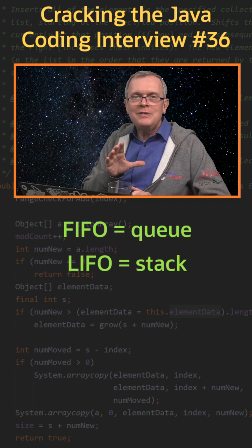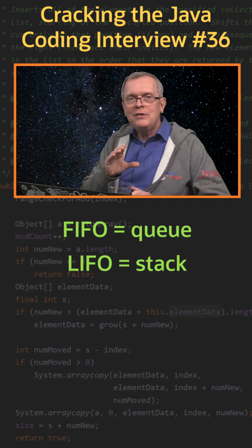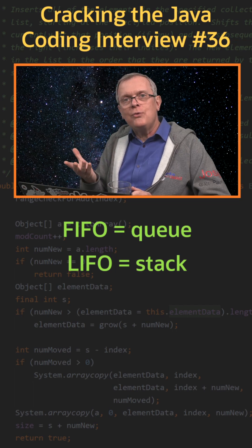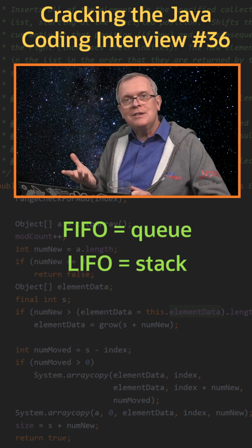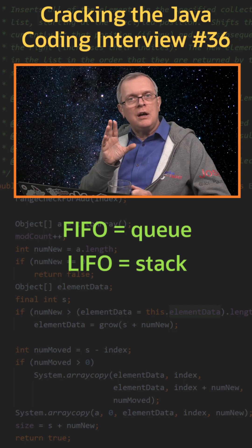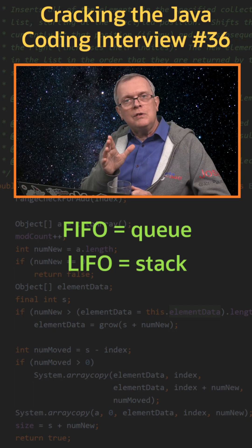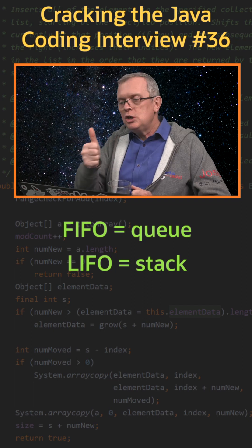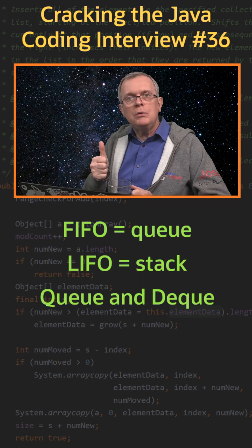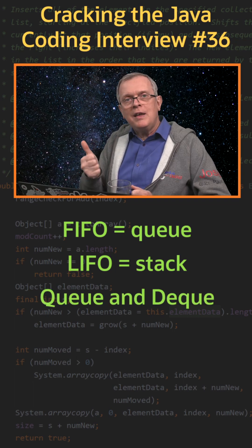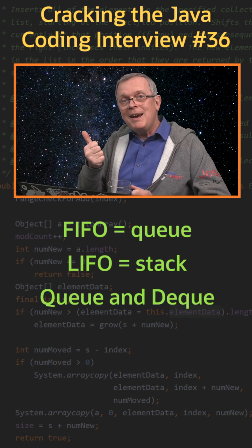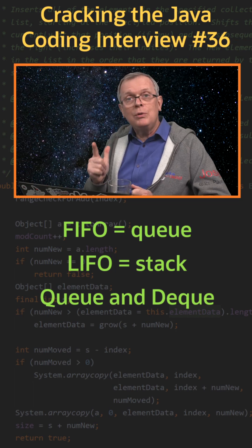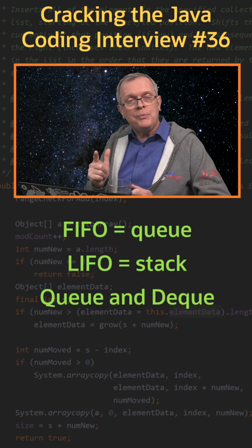Less short answer: FIFO stands for first in first out and LIFO stands for last in first out. There are two interfaces in the JDK to model these: Queue, which models FIFO, and that is extended by Deque, which is the second interface that models LIFO.